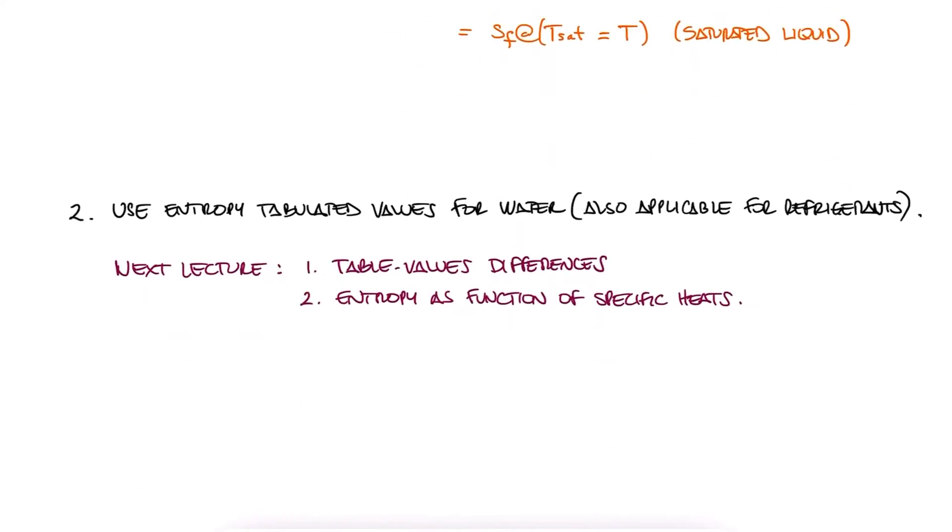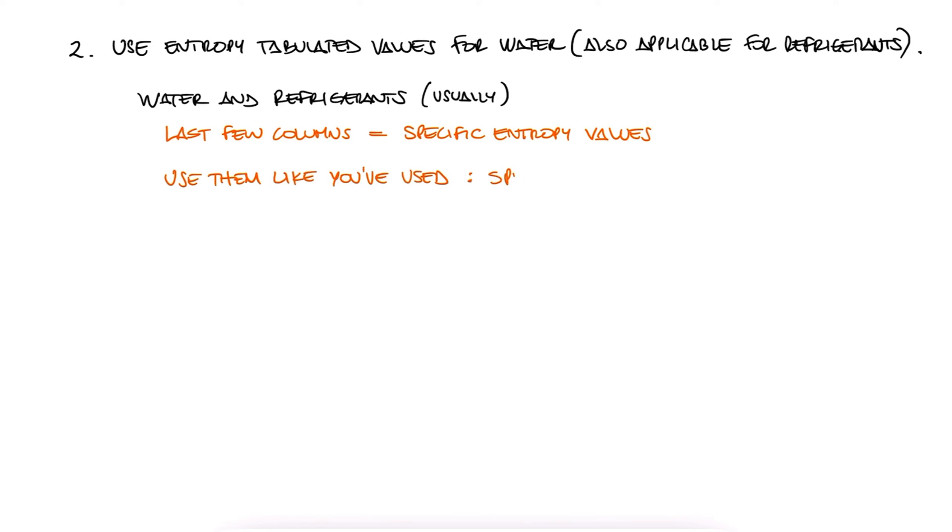As for goal 2, this is simple. All you need to know is that for water and refrigerant tables, you have the specific entropy values, and you can just use them directly as you've always used specific volume, specific internal energy, and specific enthalpy. That's about it. So, let's look at a short example where we make use of our water tables to find entropy, and if you want to check more complex examples, make sure to check out the links I've left in the description below.